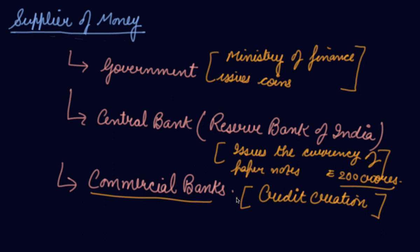In summary, the sources of money supply are the government, the central bank, and the commercial banks. The Ministry of Finance issues one-rupee notes and all coins. Money is mainly supplied by the Reserve Bank of India, which issues currency on the basis of the minimum reserve system — they keep rupees 200 crore as reserve, of which rupees 115 crore must be the minimum gold reserve, and the rest can be in foreign exchange.